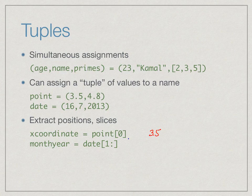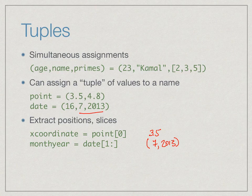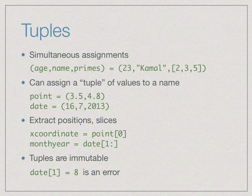Or we can take a slice — if we want only the month and year from a date like 7 and 2013, we take date and slice from index 1 to the end, giving us 7 comma 2013. So a tuple behaves very much like strings and lists. But the key difference between a tuple and a list is that a tuple is immutable — it behaves more like a string.